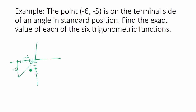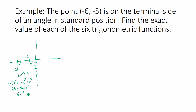I'll be finding the trig function values at this angle, but first I need the hypotenuse. How do I find the hypotenuse if I know the two legs? Pythagorean theorem. So negative 5 squared plus negative 6 squared equals R squared. That means 25 plus 36 equals R squared, so 61 equals R squared. Taking the square root of both sides gives square root of 61 equals R. So my hypotenuse measure is square root of 61.